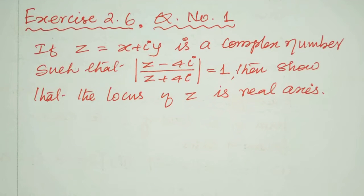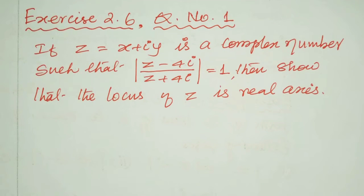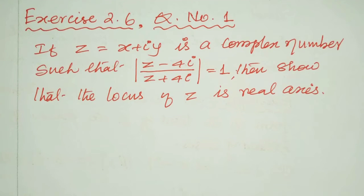Exercise 2.6, question number 1. If z equals x plus iy is a complex number such that the modulus of (z minus 4i) divided by (z plus 4i) equals 1, then show that the locus of z is the real axis.